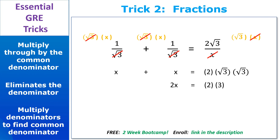So this is pretty simple to solve. We end up with 2x equals 2 times 3 — remember, root 3 times root 3 equals 3. So 2x equals 6, which means x equals 3. Very nice job.